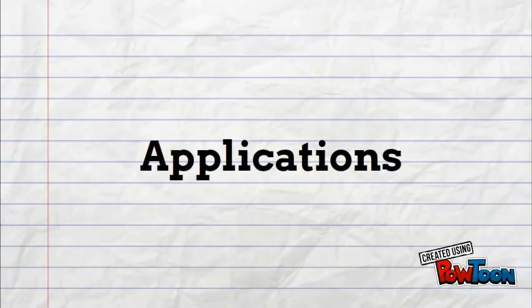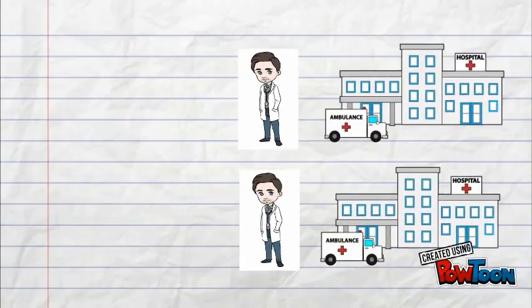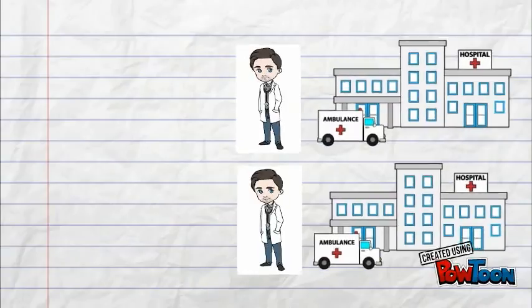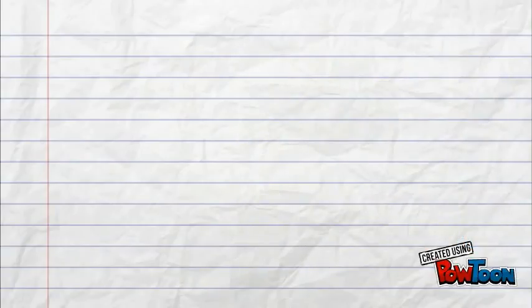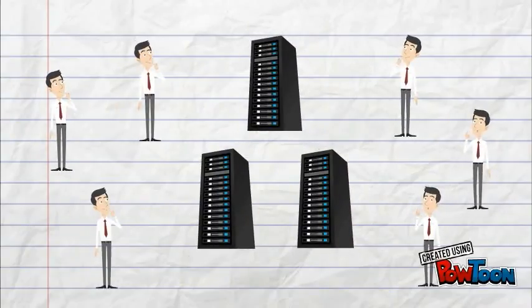Algorithms of finding solutions to a stable marriage problem have applications in a variety of real-world situations. Perhaps the best known of these being the assignment of graduating medical students in their first hospital appointments. An important and large-scale application of stable marriage is in assigning users to servers a large distributed internet service.